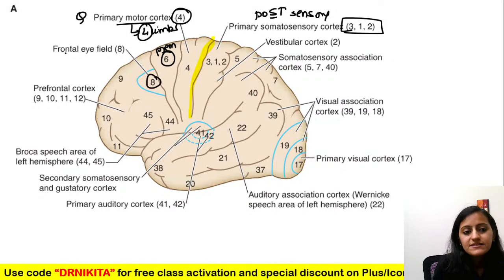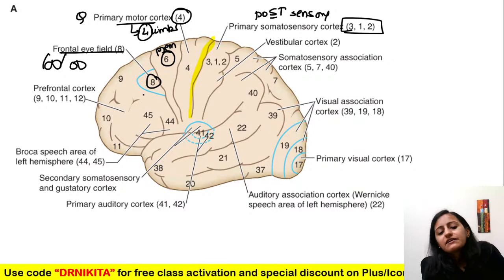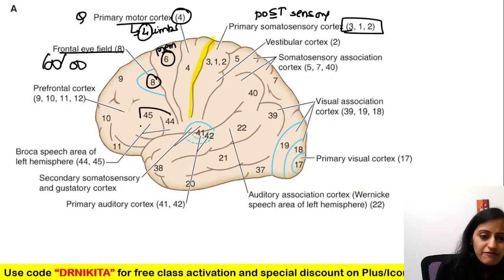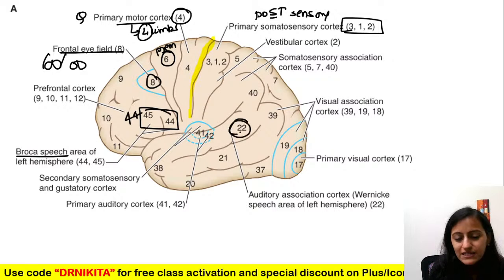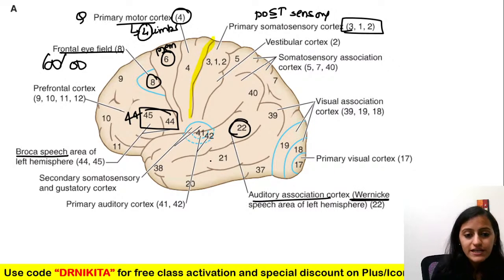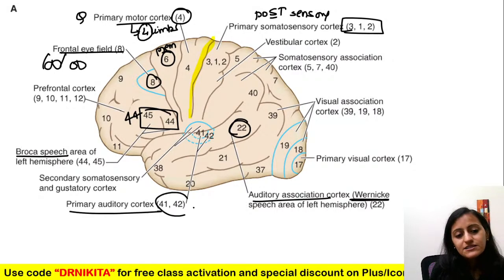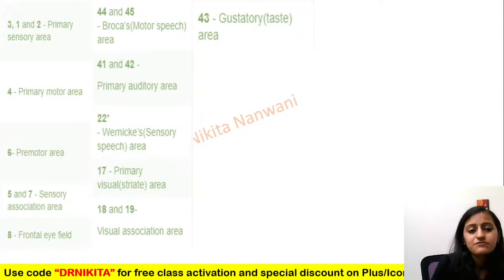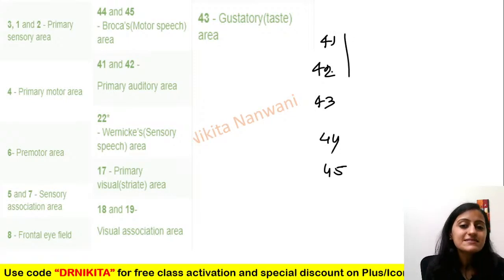Areas 4, 6, 8: pre-motor is 6, frontal eye field is 8. Broca's area is 44 and 45 — all F's. Superior temporal is 22 — T-T — Wernicke's auditory association cortex is area 22. The primary auditory cortex is areas 41 and 42.